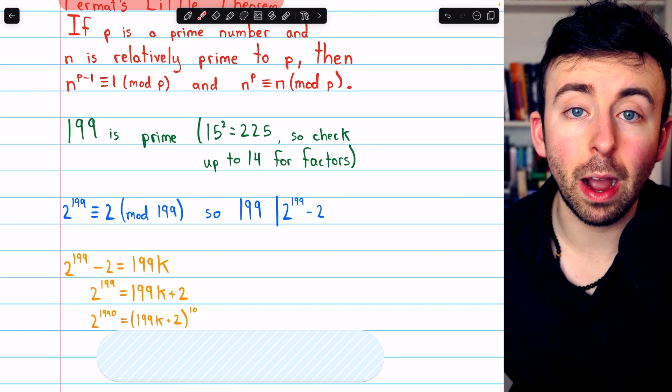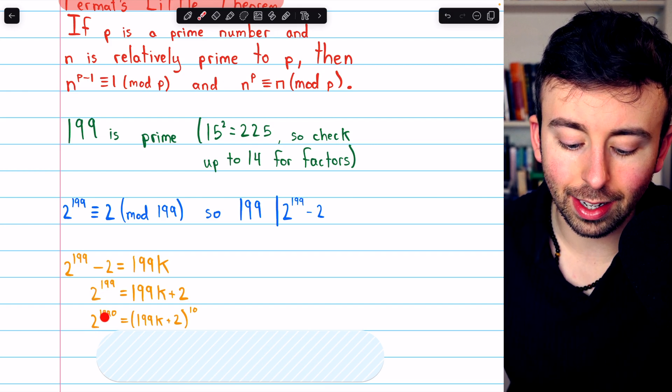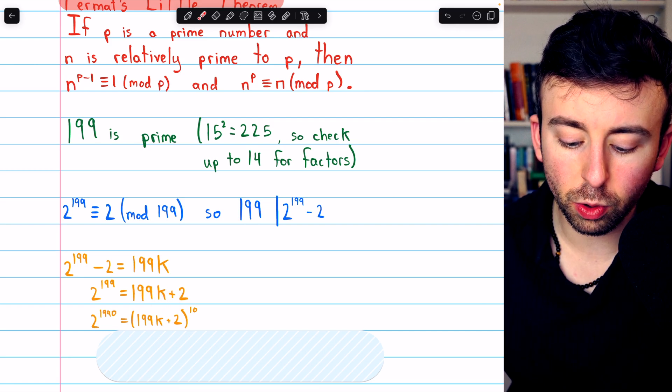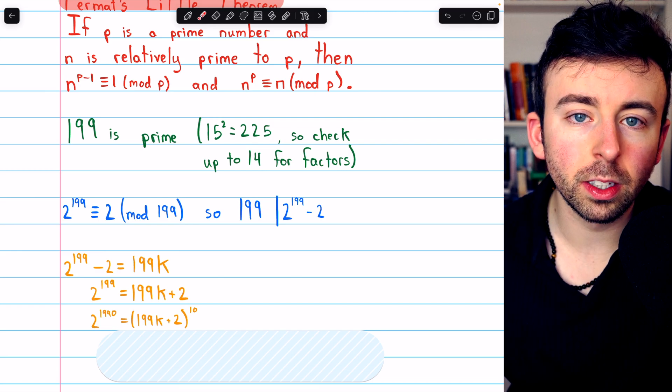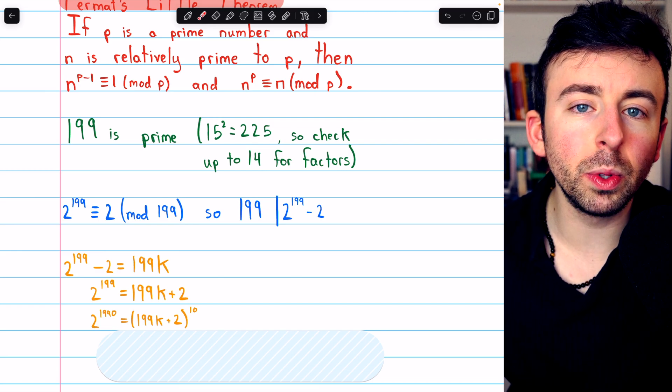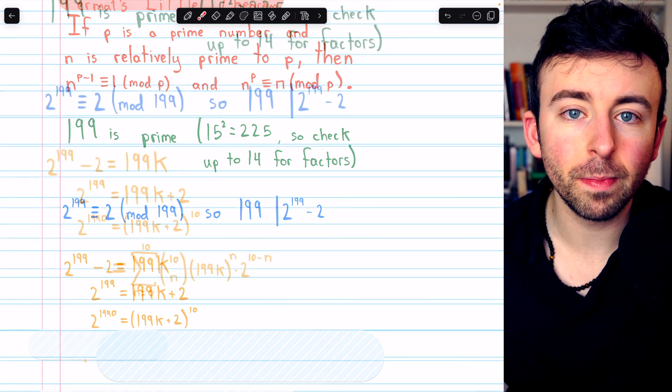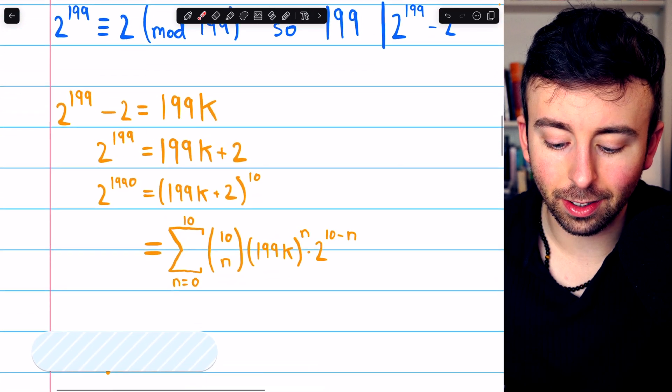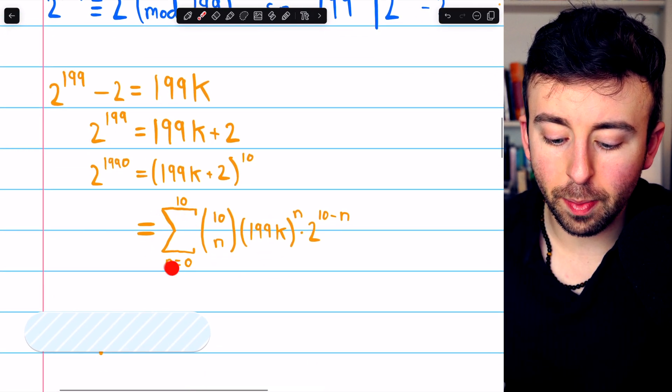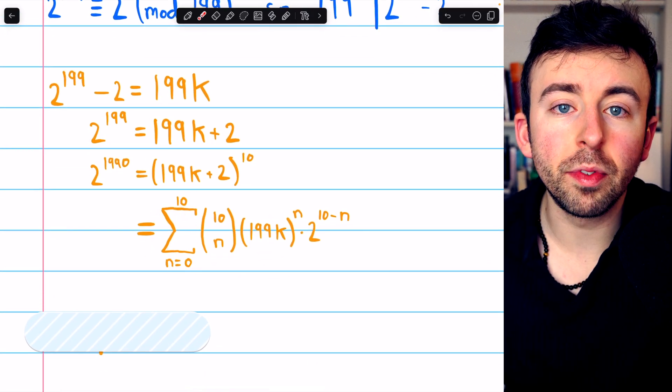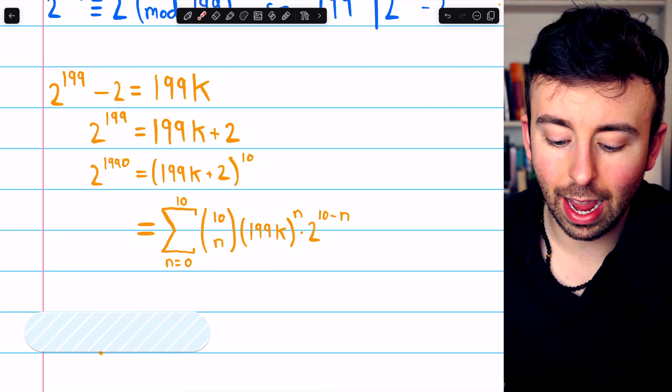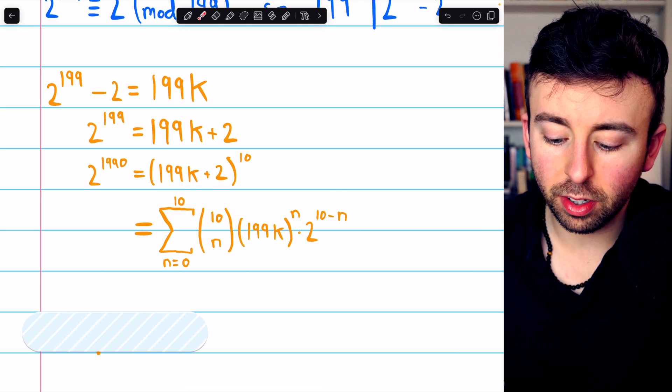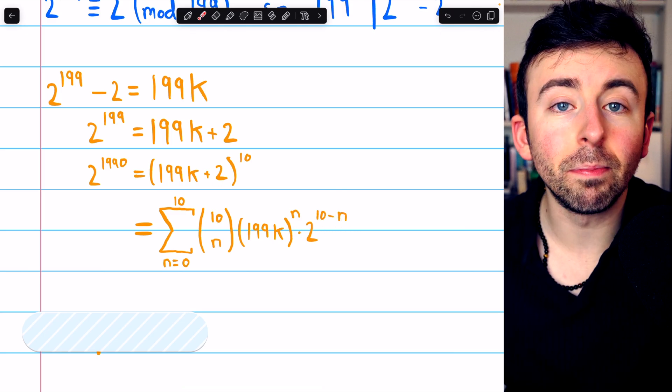Then, we get back to the power of 1990 that we desire by raising both sides of this equation to the power of 10. 2 to the 199 to the power of 10 is just 2 to the 1990. And on the right, we have 199k plus 2 to the power of 10. This is a binomial to a power of 10. So now we will use the binomial theorem. The binomial theorem tells us exactly how something like this expands, and it looks like this. The sum from n equals 0 to n of the binomial coefficient 10 choose n multiplied by 199k to the n times 2 to the 10 minus n.